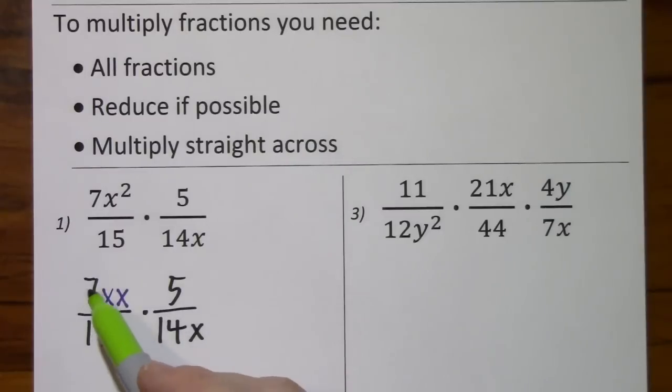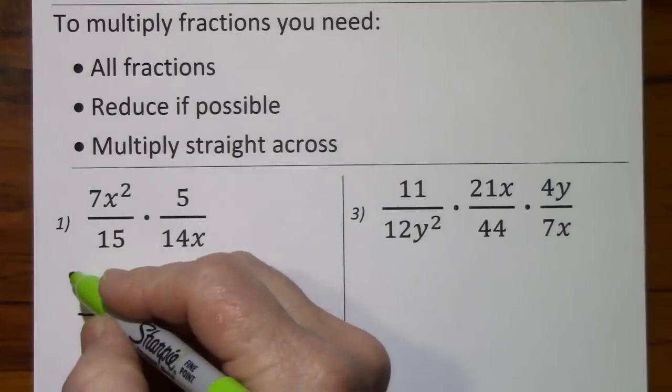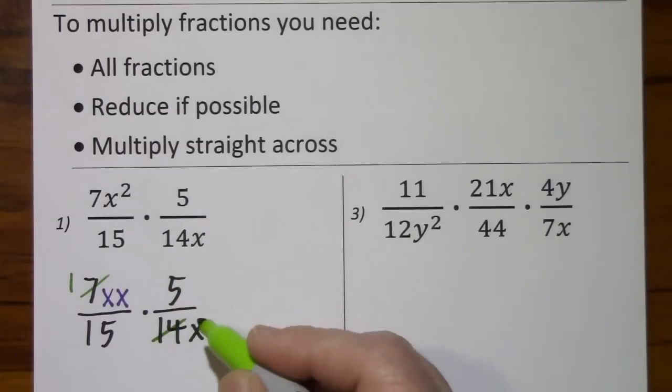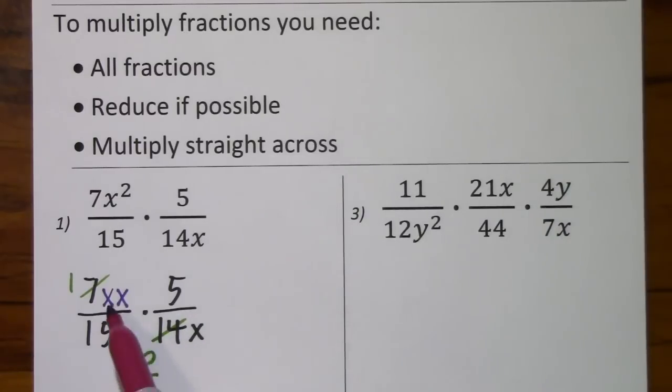Now, we'll look at the 7 and the 14 here, the common factor is 7. 7 divided by 7 is 1, 14 divided by 7 is 2, and we're basically using the same process with these variables.